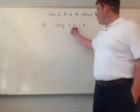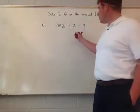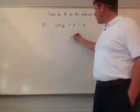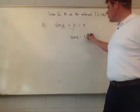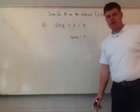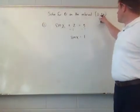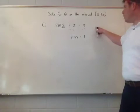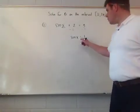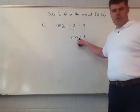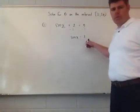We subtract 2 from both sides, and what you're left with is sine of x is equal to 1. Now I want to know what theta is on the interval of 0 to 2π, so the question I need to ask myself is: what angle of sine would give you an output of 1?